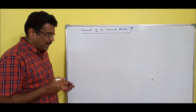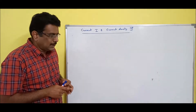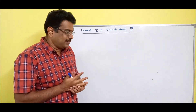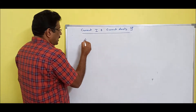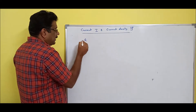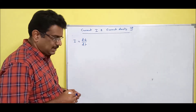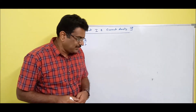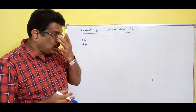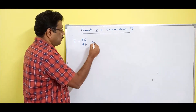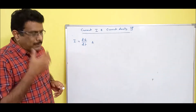Take down the definition for current. Current is defined as the rate of change of flow of charge. Rate of change: dQ by dT, that is nothing but current. It is a scalar and its unit is ampere — credit goes to Mr. Ampere. So I is equal to dQ by dT.